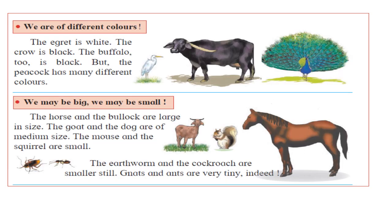Animals are of different colors. The egret is white, the crow is black, and the buffalo is also black. But the peacock has many different colors — it is very colorful. This means there are variations in the color of animals.